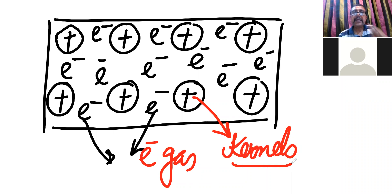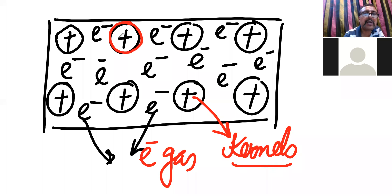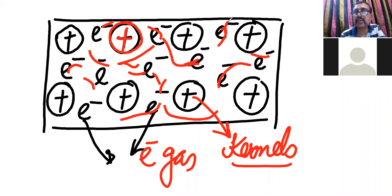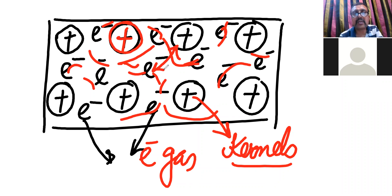So if you ask what the constituent particles in metals are, the answer is positively charged kernels. These kernels are immersed in a sea of electrons — an electron gas that moves in the background. There is a force of attraction between the negatively charged electrons and the positively charged kernels.